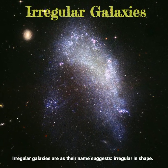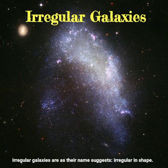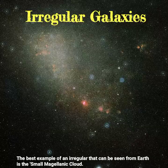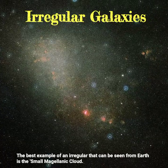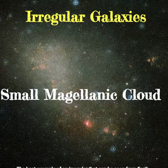Irregular galaxies are, as their name suggests, irregular in shape. The best example of an irregular that can be seen from Earth is the Small Magellanic Cloud.